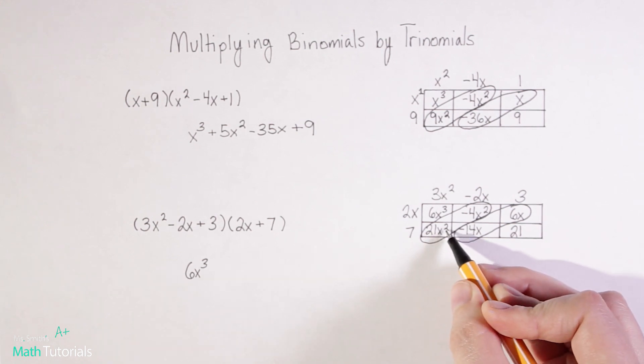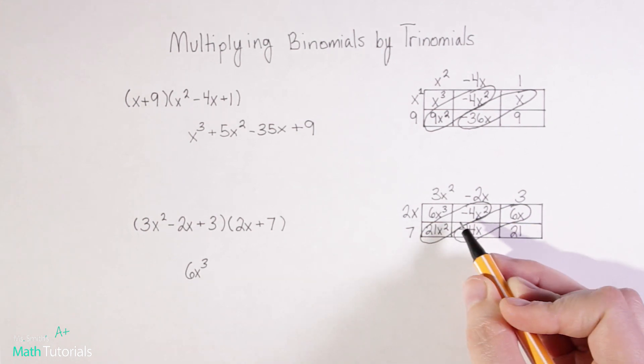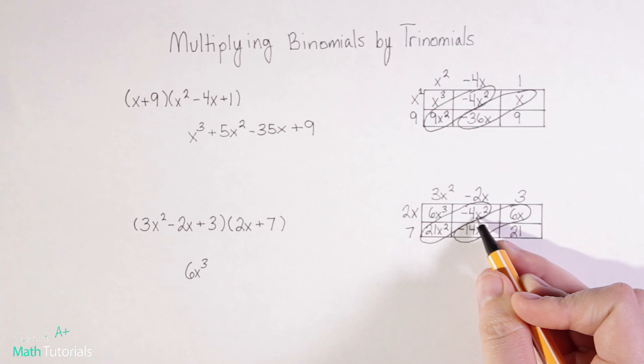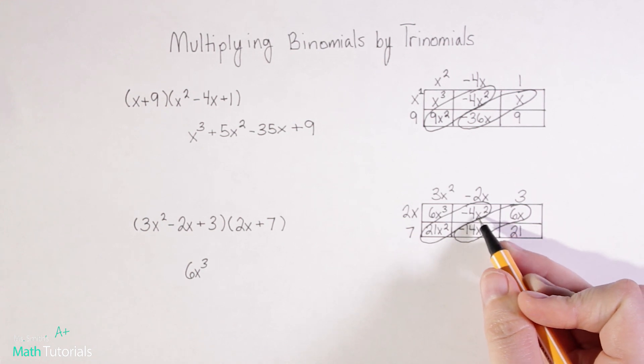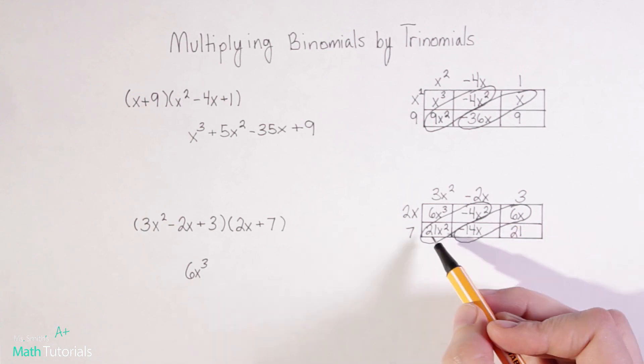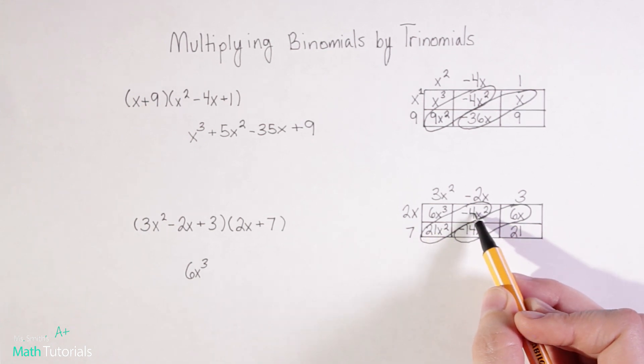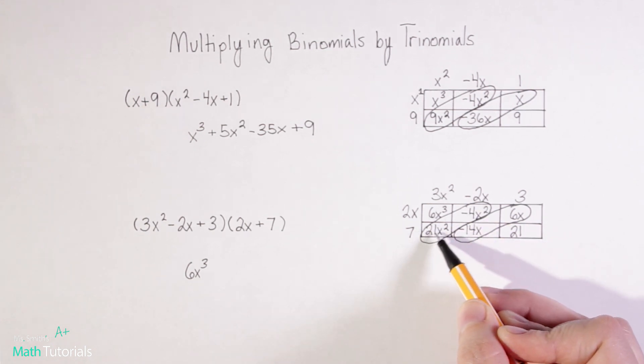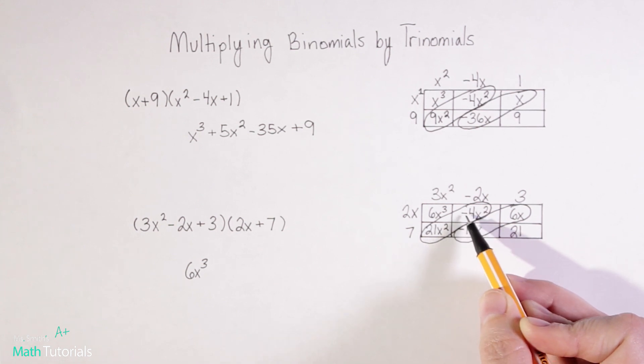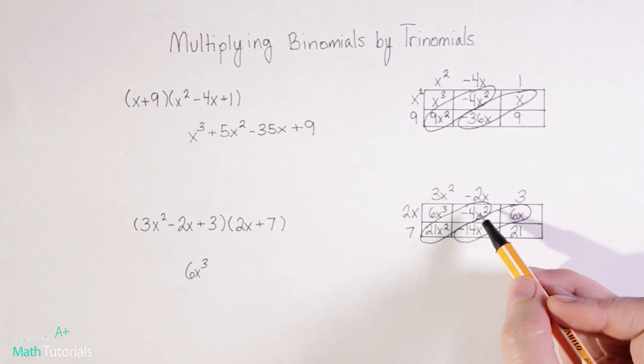Now I've got 21x squared. And this is technically plus negative 4x squared, which is the same thing as minus 4x squared. And one important thing to note is that I like to move left to right. So I do positive 21x squared minus 4x squared. But it really doesn't matter.